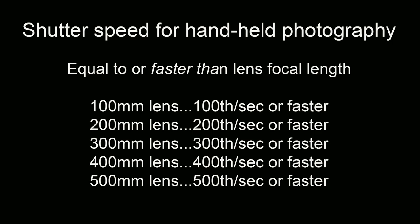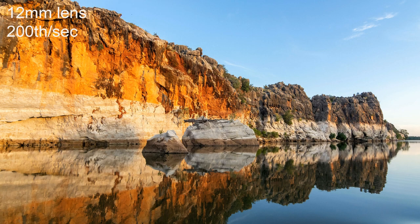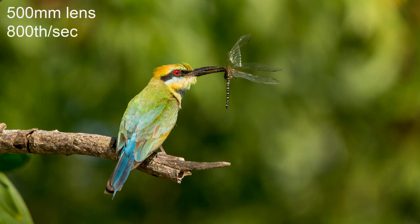Now those numbers indicate the bare minimum — the slowest shutter speed you should consider using handheld for that lens. If you can go faster naturally you would. So with a 200mm lens I'm not saying you should shoot at 1/200th of a second. In fact if the light is bright and you can shoot at 1/1000th of a second you probably should. But if the light gets low and you start to reach that cutoff point it's time to consider putting your camera on a tripod. If you can remember that it should get you by in most situations.